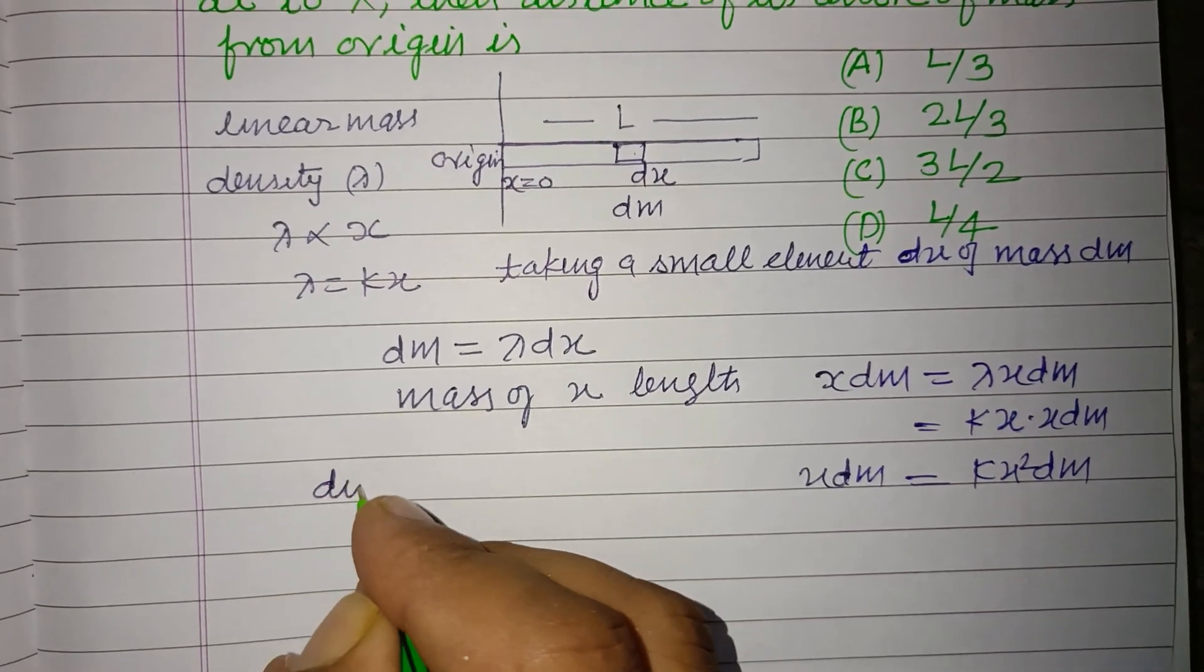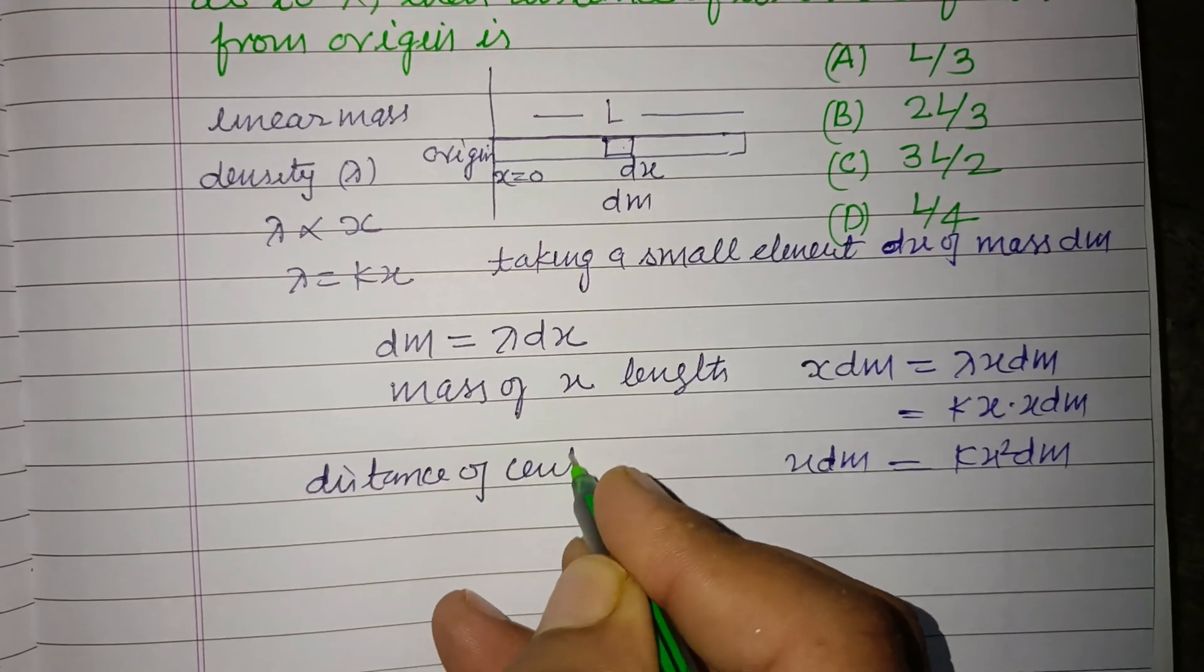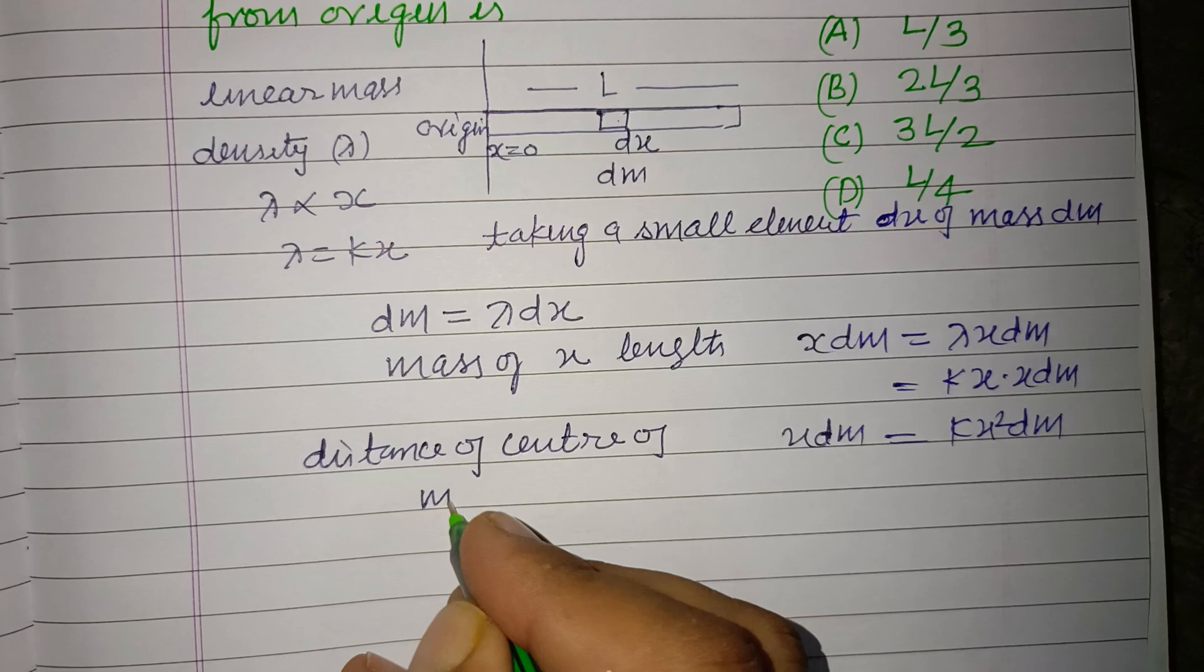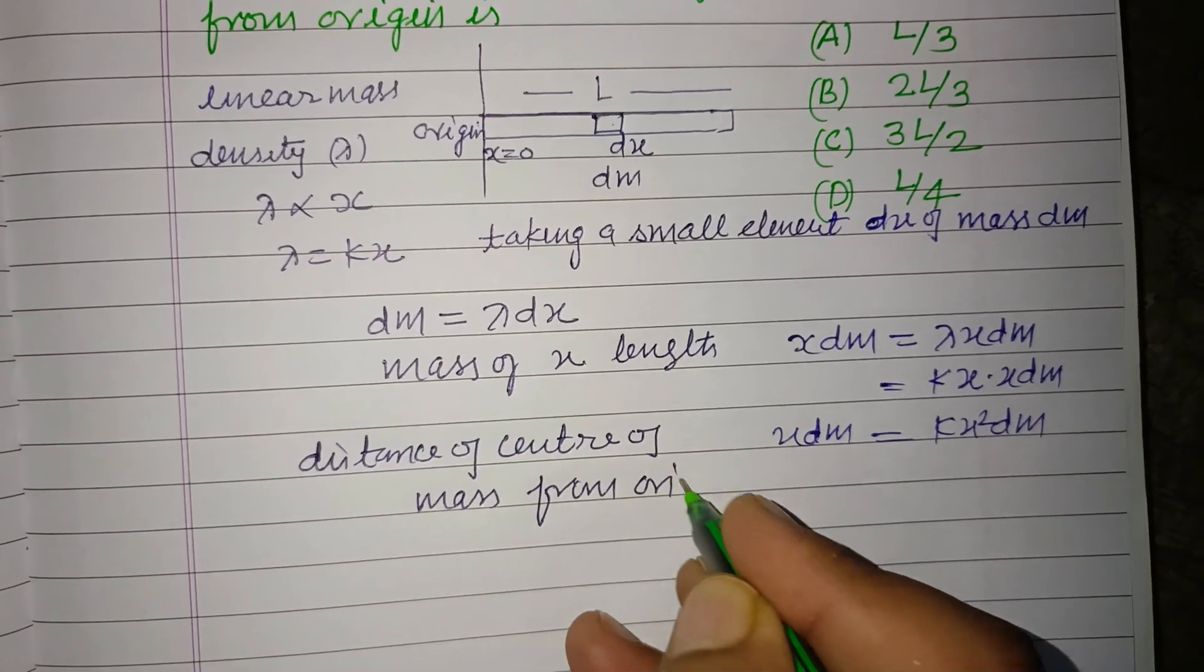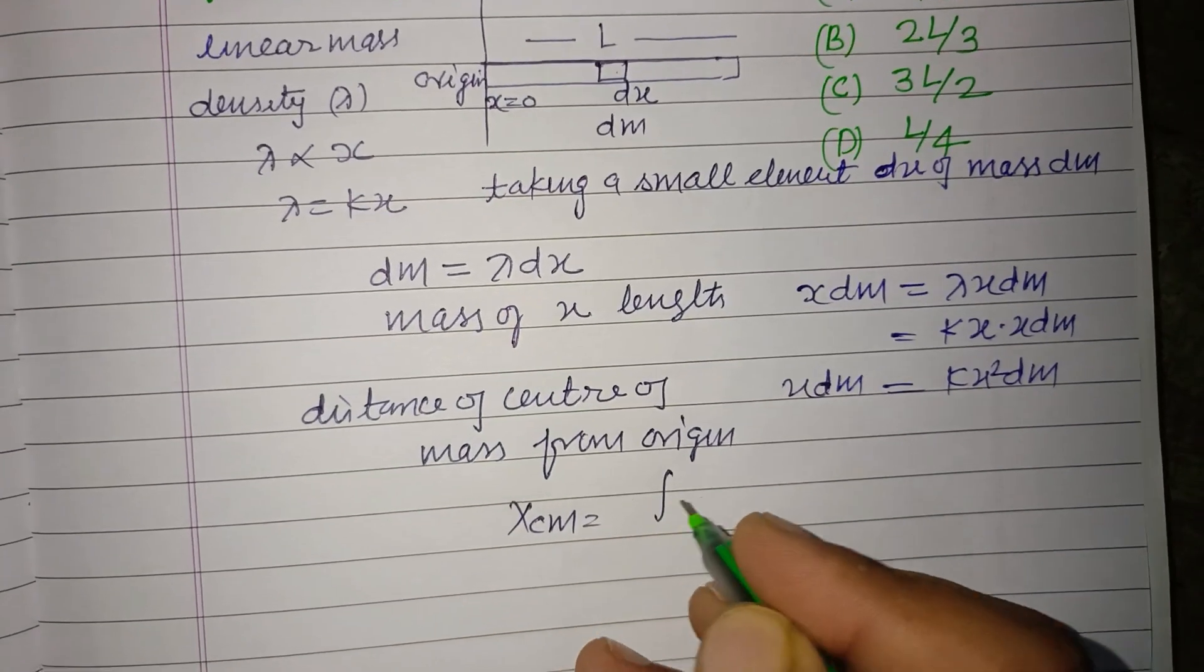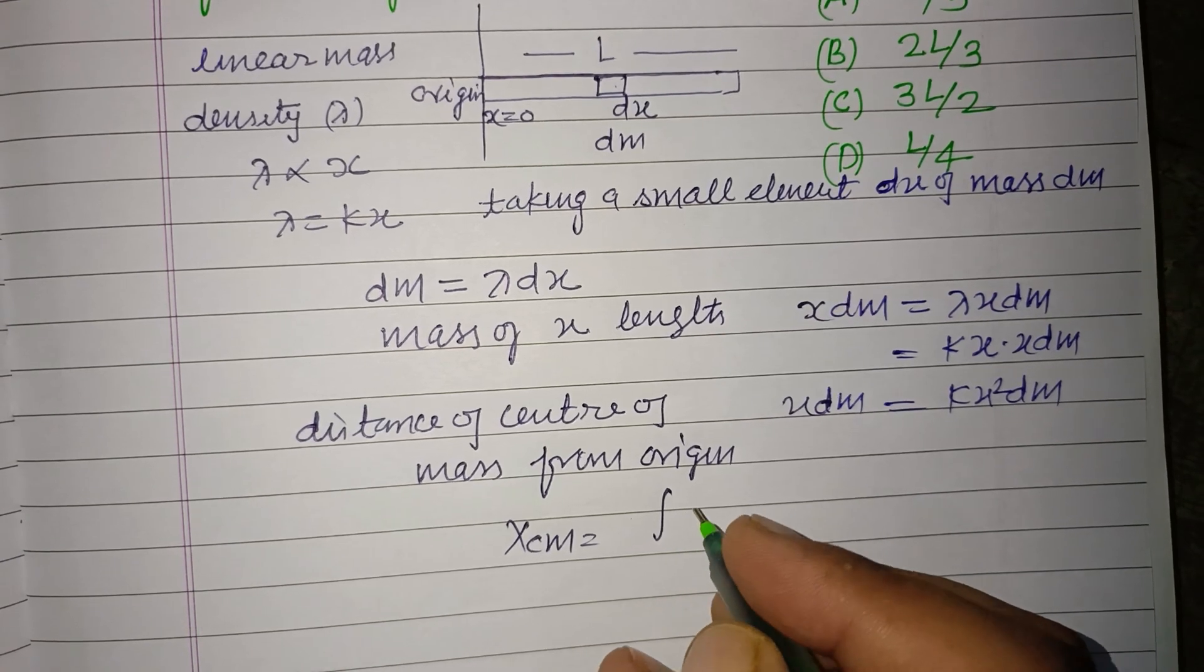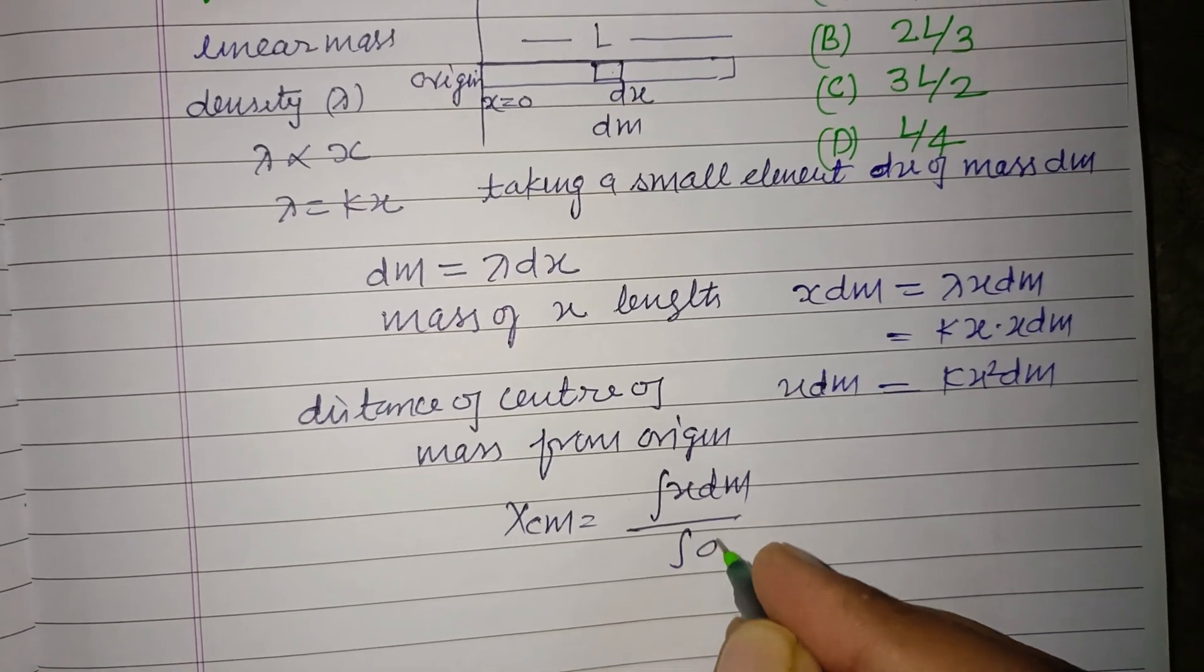Distance of center of mass from origin, which is x distance. So xcm equal to integration xdm over integration dm. And xdm is kx squared dx.